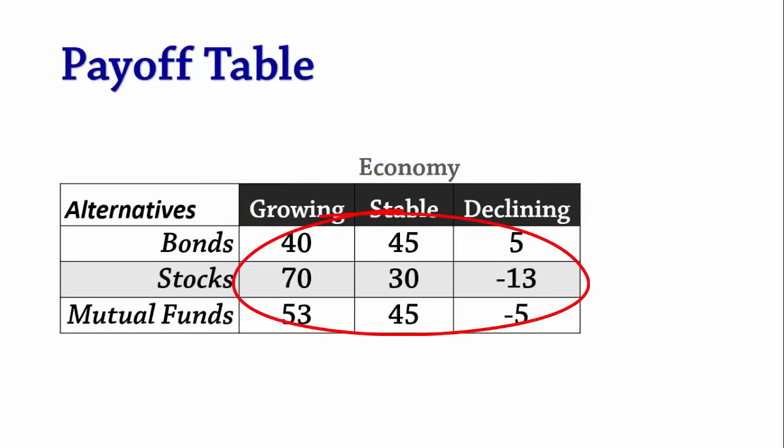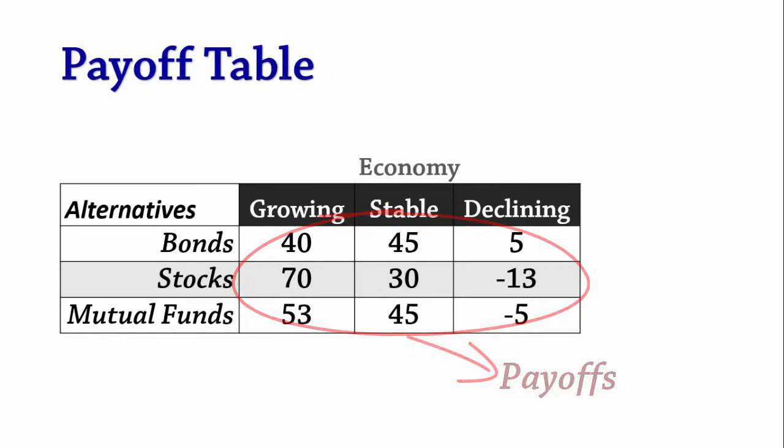The values in the table are called payoffs. They could be profit, cost, distance, time, and so on. In this example, we treat them as profits.